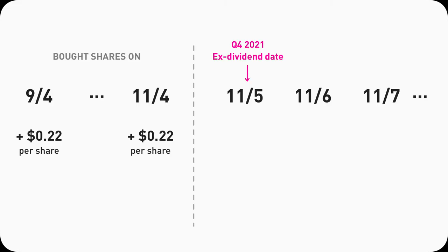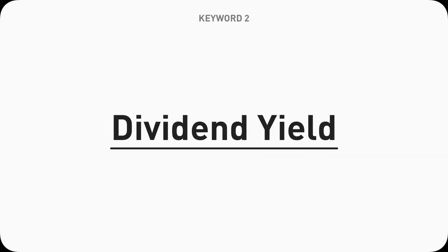It's clear cut: if you buy Apple stock on November 4th, yes, you will receive the dividends. November 5th — no. November 6th — no. November 7th — no, and so on.